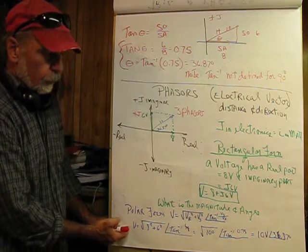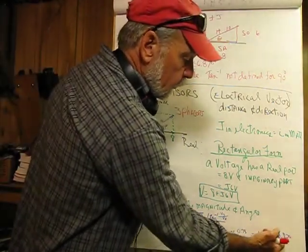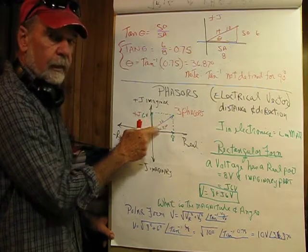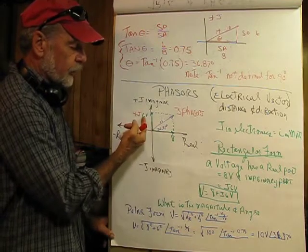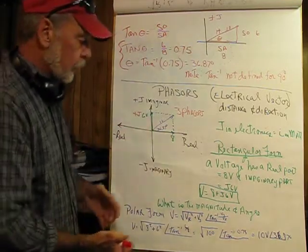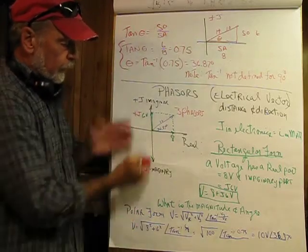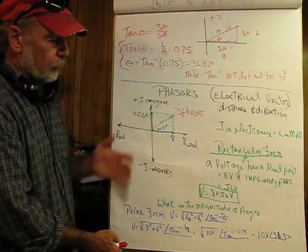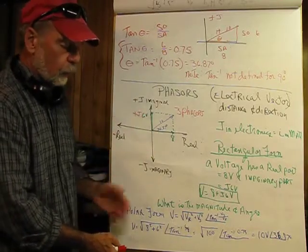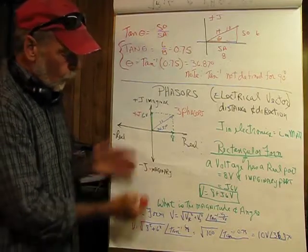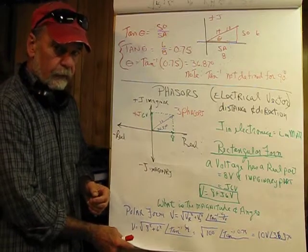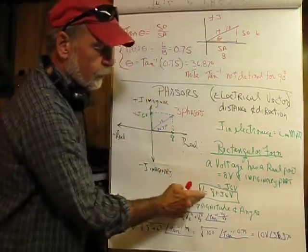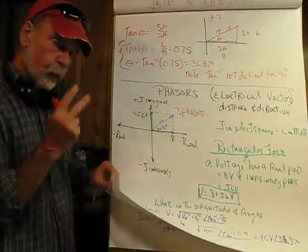So, represented in polar form, it would be 10 volts at 36.87 degrees — 10 volts, with an angle of 36.87 degrees. In rectangular form, it's 8 plus j6. They both mean the same thing. The reason we want to be comfortable with rectangular and polar forms is we're going to be adding, subtracting, multiplying, and dividing, so we want to move back and forth between the two very quickly and easily.